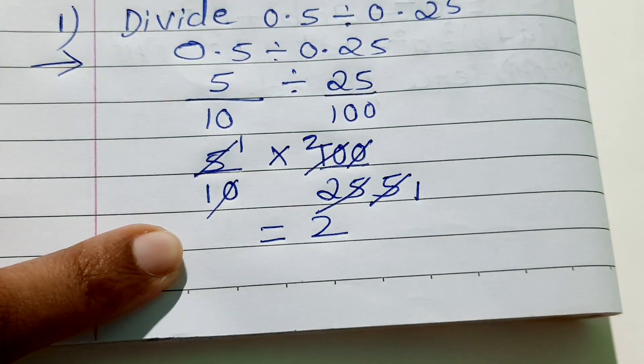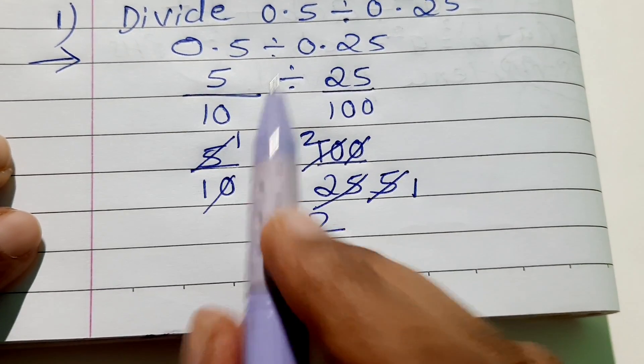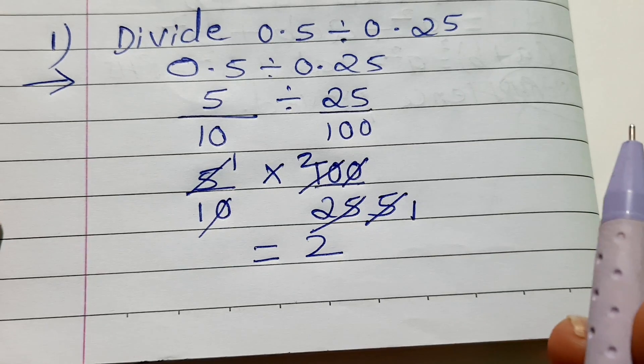Your answer will be nothing but 2. So I hope you'll have understood how to divide 0.5 by 0.25. Thanks for watching.